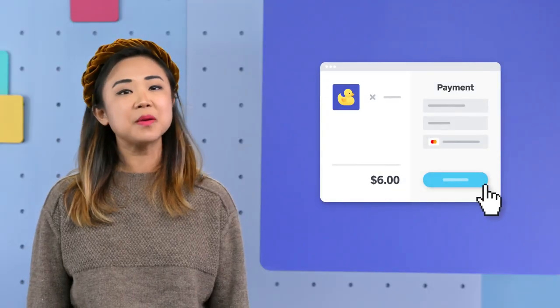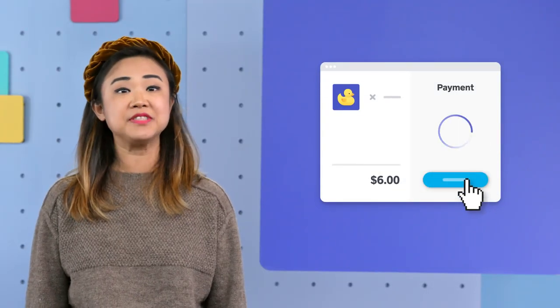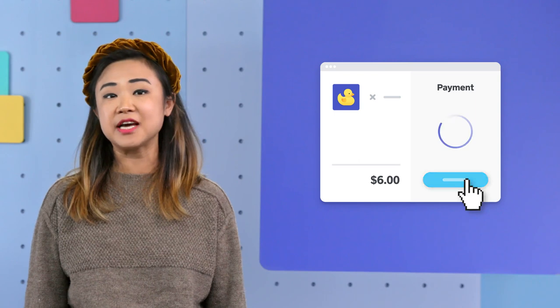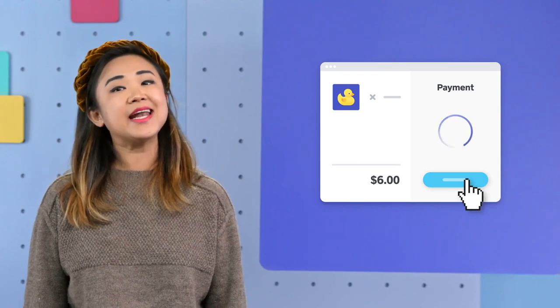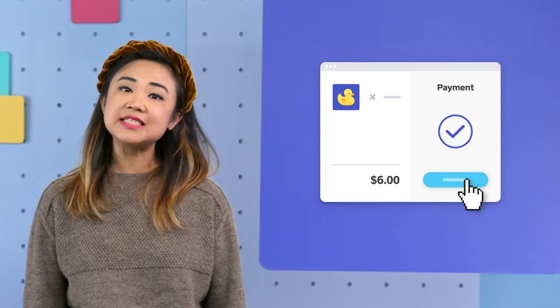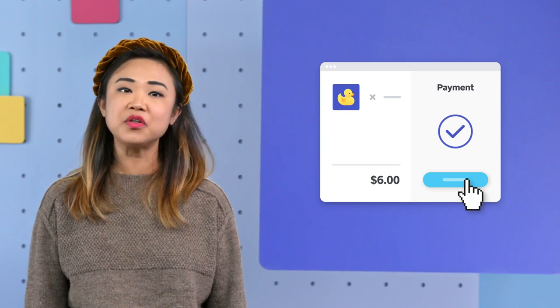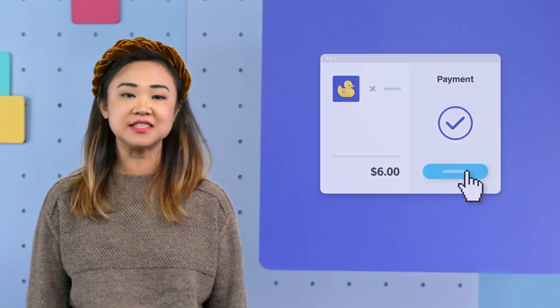So what's item potency? It protects something from happening more than once when it's tried multiple times. For example, I'm buying a rubber ducky and click the pay button a couple of times because my internet is slow and I can't tell if it went through or not. Item potency is something that can protect you from buying more than one rubber ducky in this scenario.